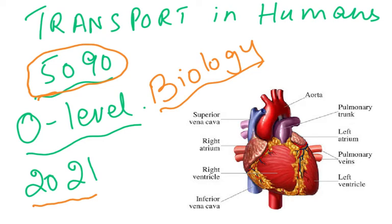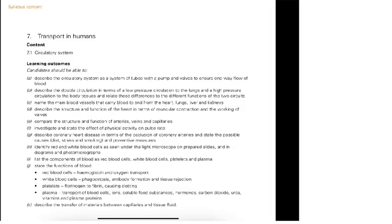What we need to understand is first what is in the syllabus of this chapter. It's Transport in Humans, chapter seven. The circulatory system learning outcomes: candidates should be able to describe the circulatory system as a system of tubes with a pump and valves to ensure one-way flow of blood, describe the double circulation, and name the main blood vessels that carry blood to and from the heart, lungs, liver and kidneys.